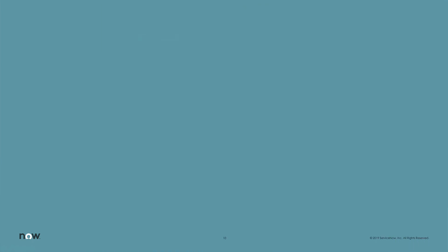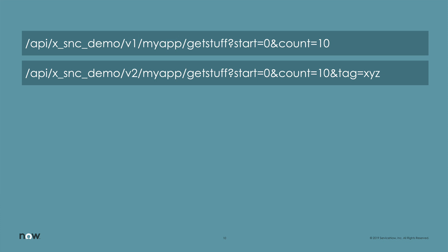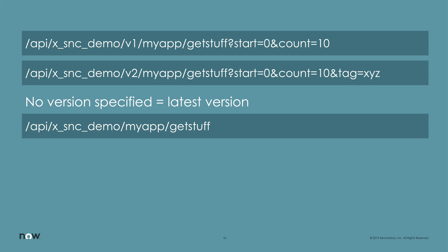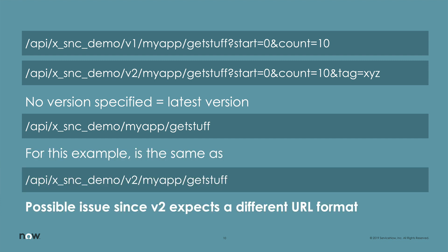REST is fairly fast to implement with easy-to-use tools in the ServiceNow platform. Another benefit of REST is that it can be versioned. For example, let's say we deployed a custom REST API that accepts two parameters, and then later we discover we needed three. We can add a version to the URL so older systems continue to use the original V1 unaffected, while we implement and deploy the new V2 with three parameters. If no version is specified, the latest is implied, so think through versioning requirements before realizing later that we need to make a lot of system updates.